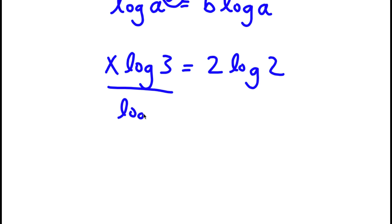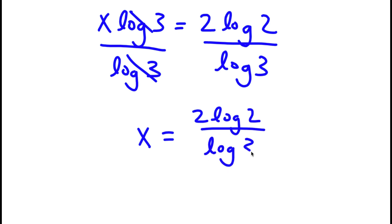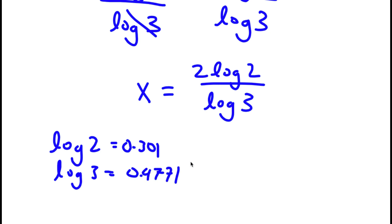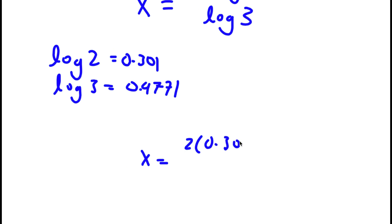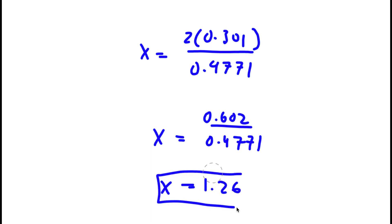Now to solve this, I'm going to divide both sides by log 3, and these two cancel out. I'm left with x is equal to 2 times log 2 over log 3. Now log 2 is equal to 0.301, and log 3 is equal to 0.4771. So I have x is equal to 2 times 0.301 over 0.4771, which is 0.602 over 0.4771, which is equal to 1.26. So this is my answer.